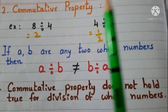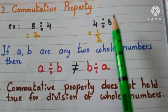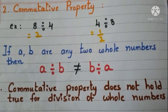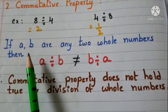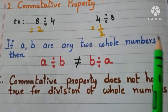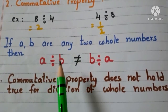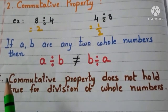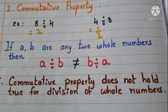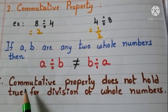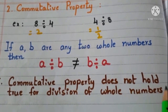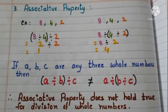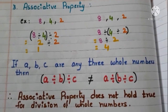See here the answers are not the same. When we change the order and divide, we are not getting the same answers. If a and b are any 2 whole numbers, then a divided by b is not equal to b divided by a. Therefore we can conclude that commutative property does not hold true for division of whole numbers.